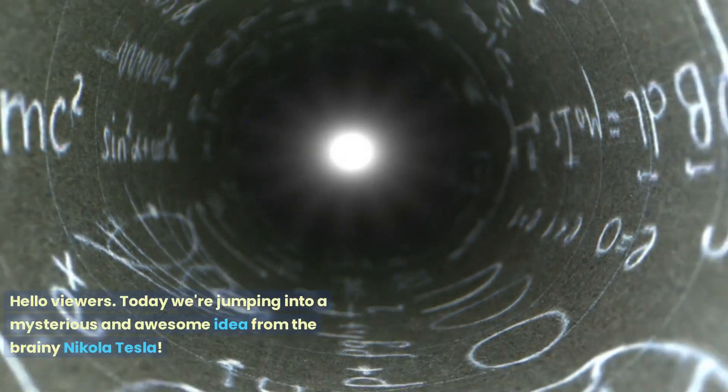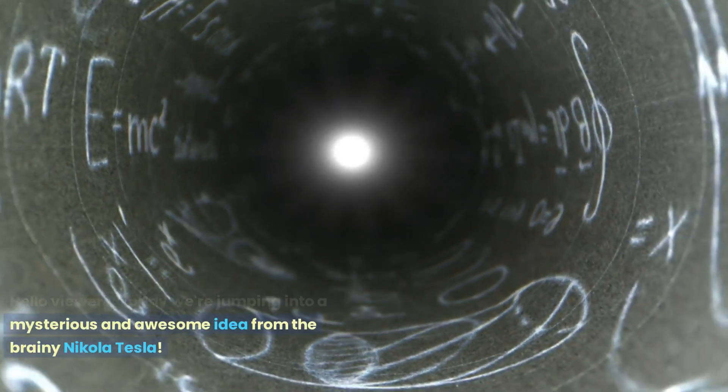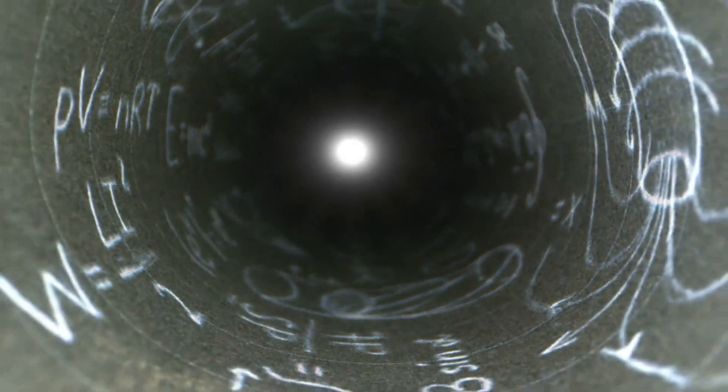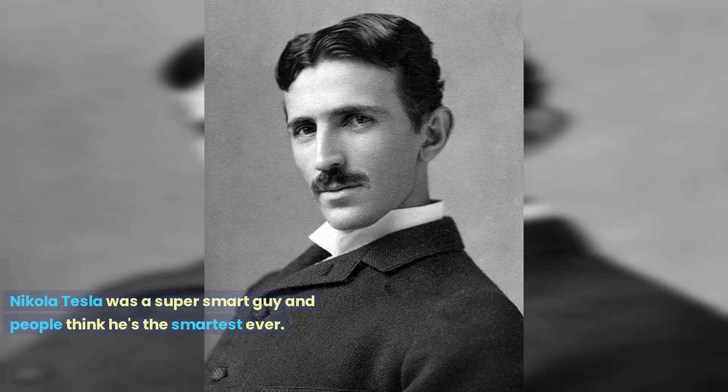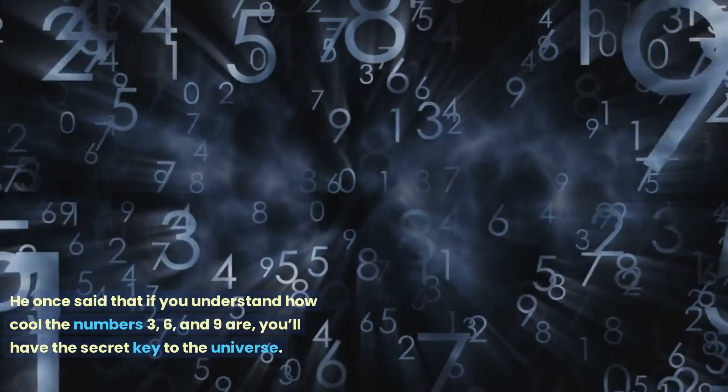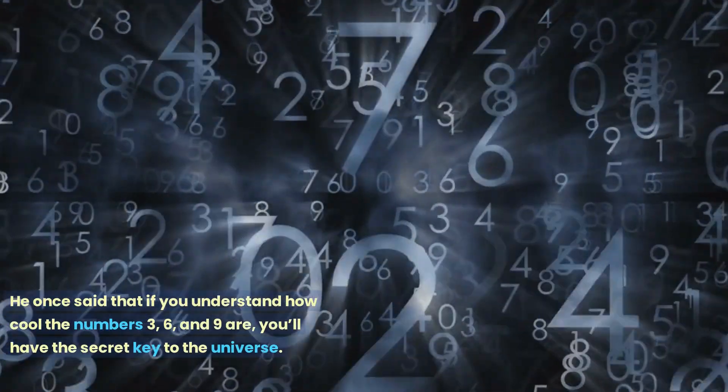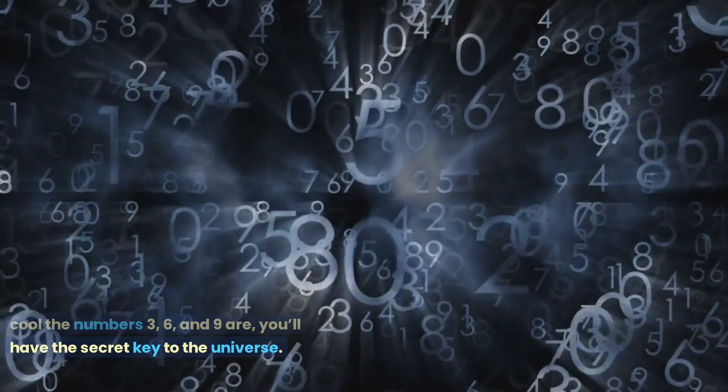Hello viewers. Today we're jumping into a mysterious and awesome idea from the brainy Nikola Tesla. Nikola Tesla was a super smart guy and people think he's the smartest ever. He once said that if you understand how cool the numbers 3, 6, and 9 are, you'll have the secret key to the universe.